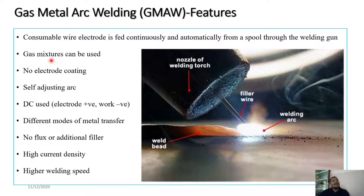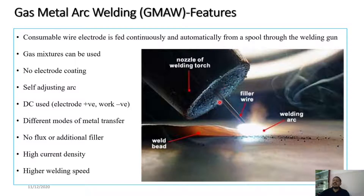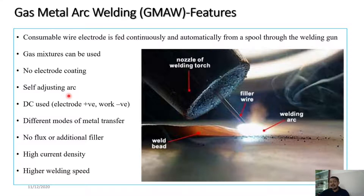No electrode coating is done; the filler wire used is a bare electrode. Shielding gas surrounds the arc from the sides of the nozzle to ensure no atmospheric contaminants are deposited into the joint. A key feature of the GMAW process is the self-adjusting arc — CV (constant voltage) power sources are used, which is what enables this self-adjusting arc characteristic.